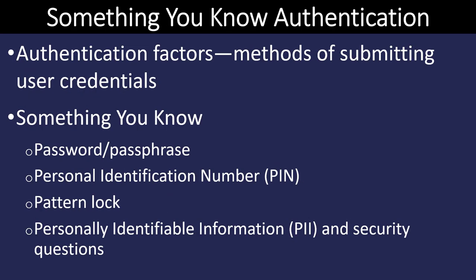There are multiple ways to gain authentication on both our local computer, a network computer, and on websites. Authentication factors are: something you know, something you have, something you are, and somewhere you are. Something you know is typically a password, maybe a personal identification number, a pattern lock, or even personally identifiable information coupled with security questions.